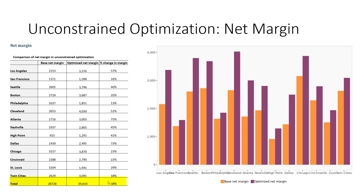We could actually improve our net margin by about 38% if we optimize our allocation and usage of salespeople. Within each individual market we can improve our net margin. In some cases we can only move it a little bit — for example, San Francisco just bumps up a little. But in Cleveland, Los Angeles, and Dallas, the optimal solution bumps up the net margin quite a bit.